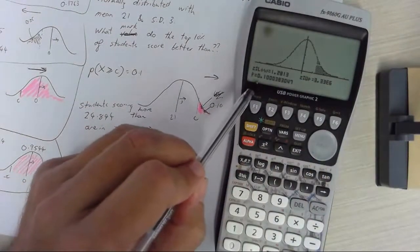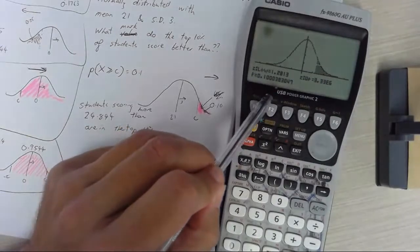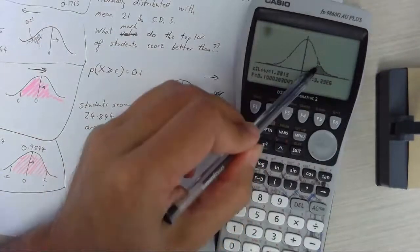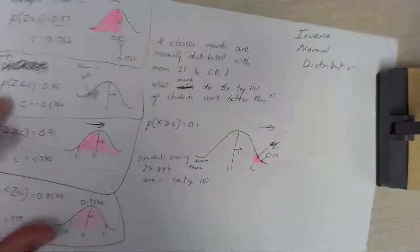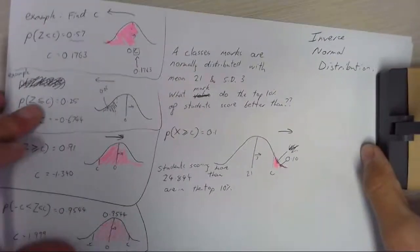Okay and you can see it's giving me an answer of 0.1000 and then a little bit of a rounding error. So that area there is 10 percent which is what I thought it was going to be in the first place. That's inverse normal distributions.